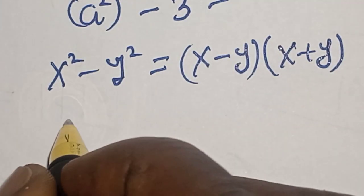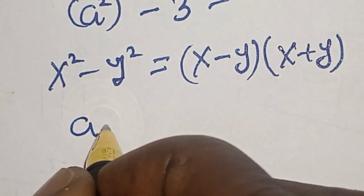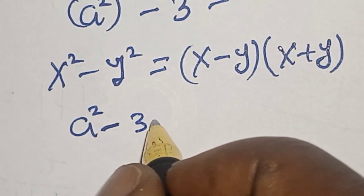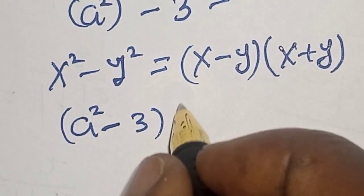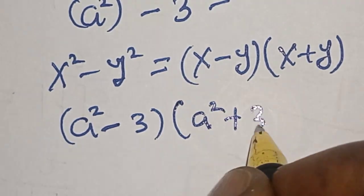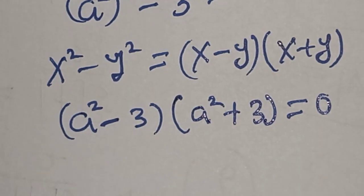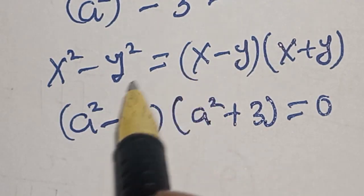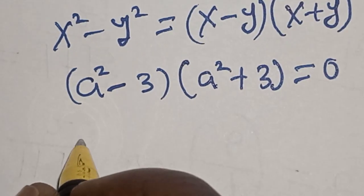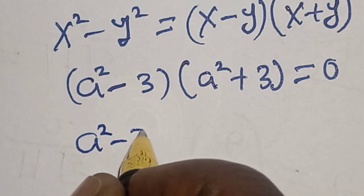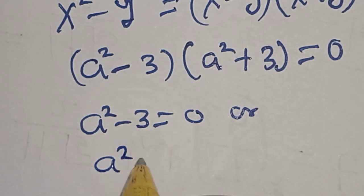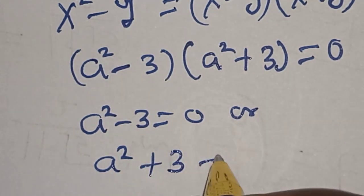Now, because S here is A squared and Y is 3, we have two cases here. That is, A squared minus 3 is equal to 0, or A squared plus 3 is equal to 0.